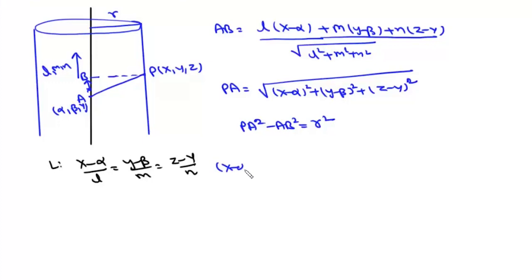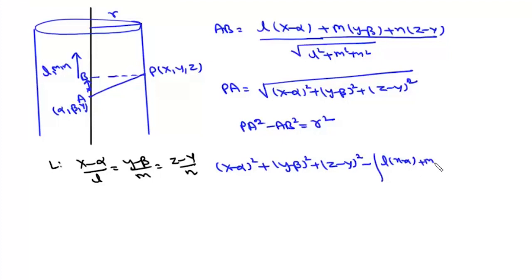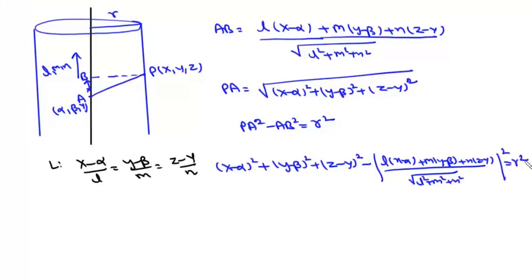Now using the Pythagorean theorem: PA² − AB² = r². So we get (x−α)² + (y−β)² + (z−γ)² − [l(x−α) + m(y−β) + n(z−γ)]² / (l²+m²+n²) = r². This is the required equation of a right circular cylinder.